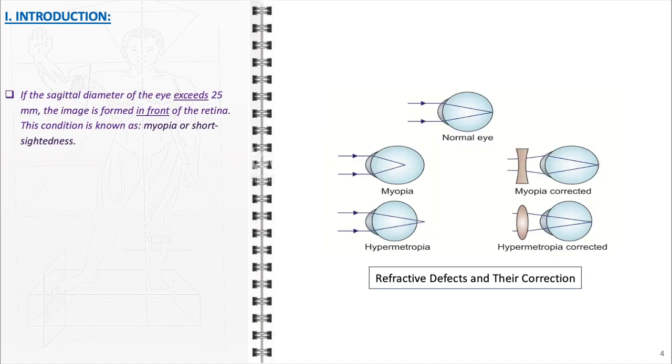Before we delve into the general structure of the eyeball, it's important to understand some key clinical correlations related to refractive conditions. This diagram provides a clear visual representation of normal vision and common refractive errors, along with their optical corrections. In the normal eye, depicted in the top left, light rays are precisely focused on the retina, which enables clear vision.